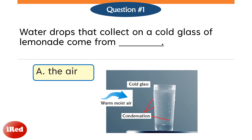Air contains water vapor. When water vapor in the air comes into contact with something cool, such as the outside of a cold glass of lemonade, the gaseous water vapor turns back into liquid water droplets. That process is called condensation.